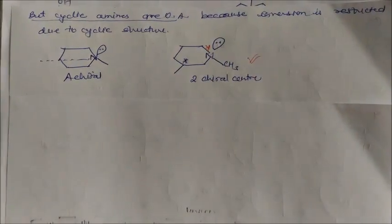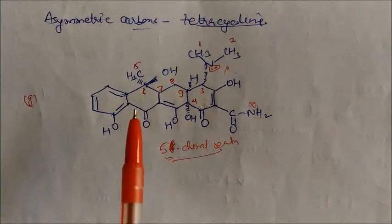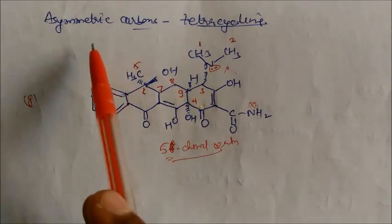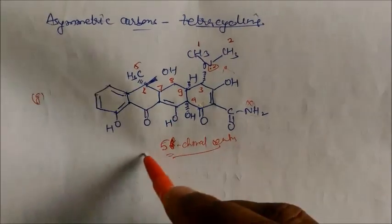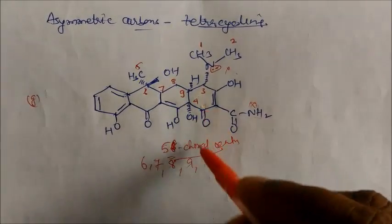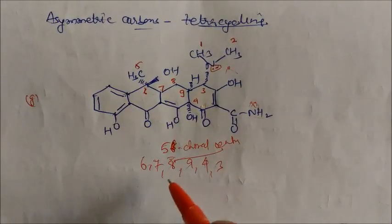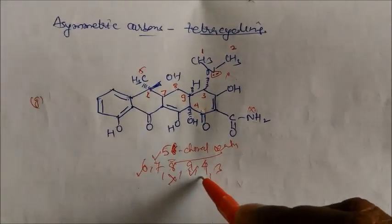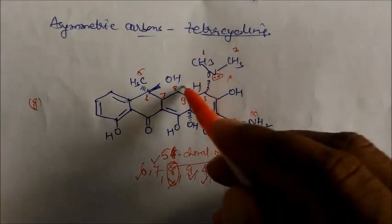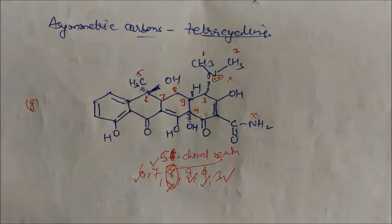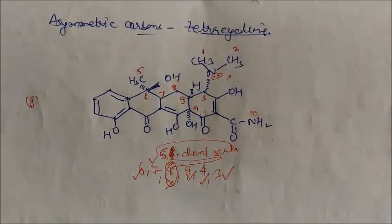Now one example — this is the compound tetracycline. You have to find out how many asymmetric carbons are there. In asymmetric carbons, we find the chiral carbons. One chiral carbon is number 6, one is number 7, one is 8, one is 9, and then 4 and 3. Carefully: position 7 is a chiral center with four different groups. Position 8 is not a chiral center. Position 9 is again chiral. Position 4 is chiral and position 3 is chiral. So there are five chiral centers. Nitrogen is not chiral because the same groups are there — so this is not chiral. There are five chiral centers present in this whole tetracycline compound.